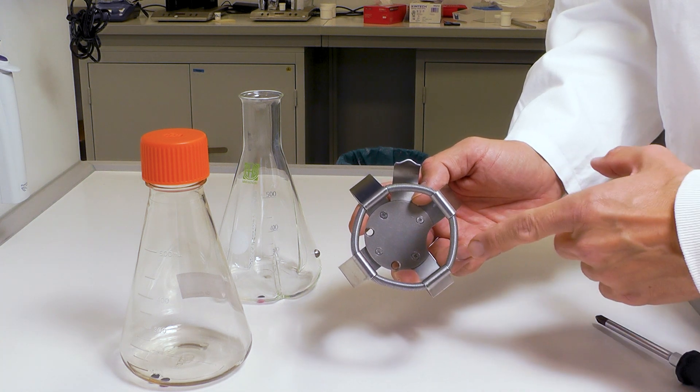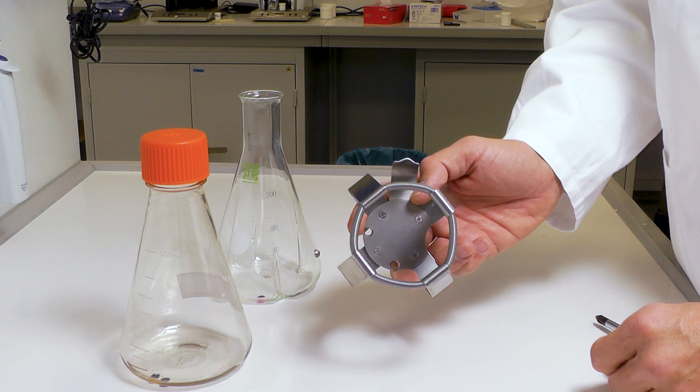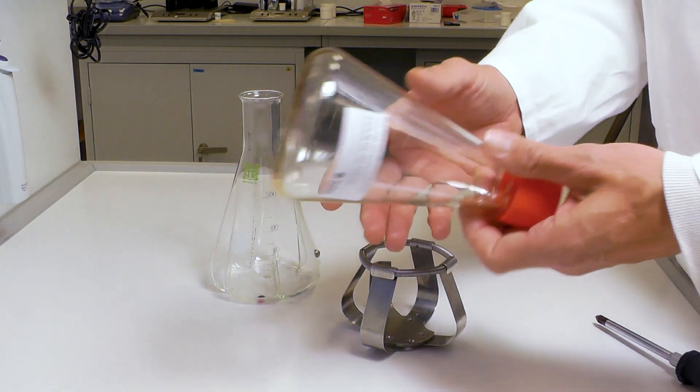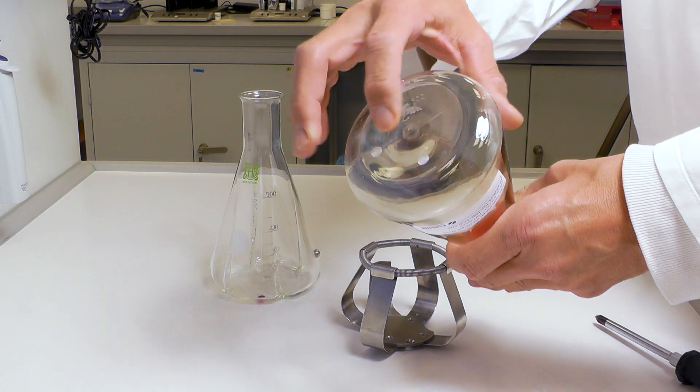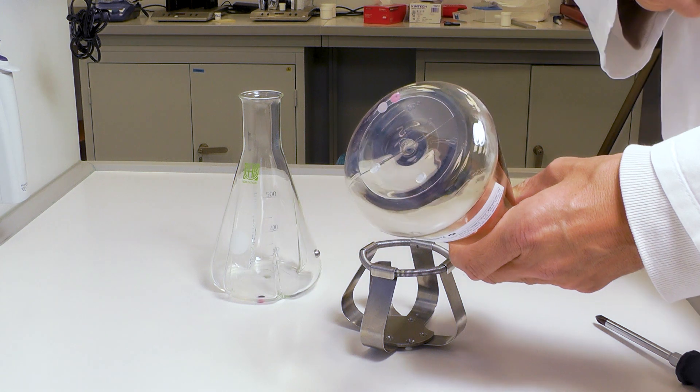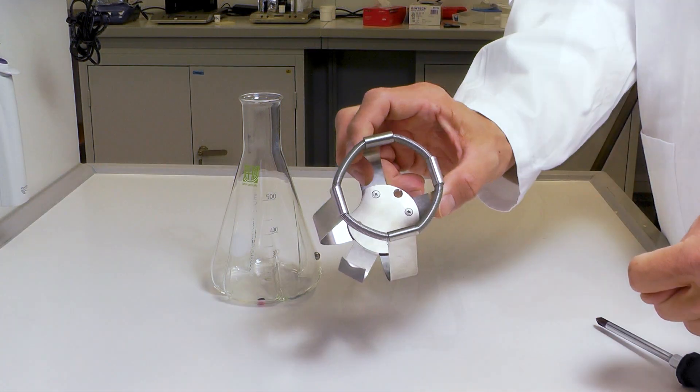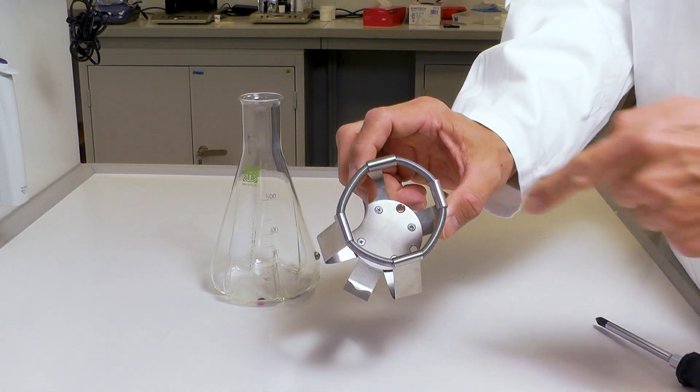There are two holes in the clamp base plate to hold the two knobs on the plastic sensor flask bottom. Glass flasks are aligned using a sideways arm.